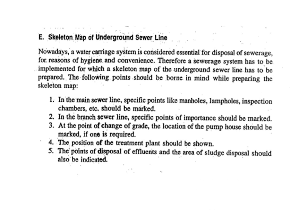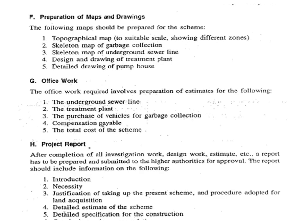After economic survey, a suitable alignment is selected for preliminary location survey for detailed investigation to obtain the most economical alignment. The preliminary survey is done as follows: the starting point is marked by a pillar; fly leveling is done to connect the nearby GTS (Great Economic Survey) Benchmark or Permanent Benchmark with the starting point; a prismatic compass survey is conducted to prepare a route survey map covering about 50 meters on both sides of the alignment; sometimes a plain table survey is done; and longitudinal leveling is done along the alignment at regular intervals of 20 or 40 meters. Maps and drawings prepared include: a topographic map to suitable scale showing different zones; a skeletal map of garbage collection; and a skeletal map of underground sewer lines.